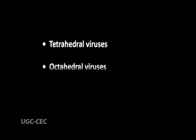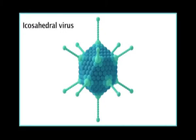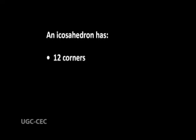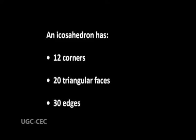These include tetrahedral viruses, octahedral viruses, and icosahedral viruses, depending upon the number of faces or corners. Of these viral groups, the icosahedral form is considered to be the most efficient shape because of the packing and bending of capsomers in a nearly spherical form. An icosahedron has 12 corners, 20 triangular faces and 30 edges. The best examples of these viruses are poliovirus and adenovirus.